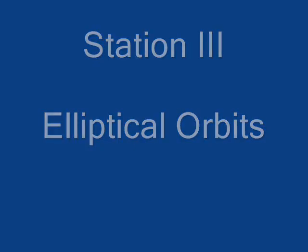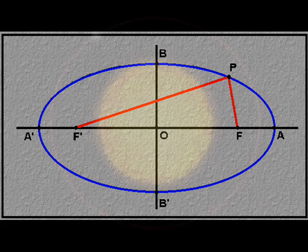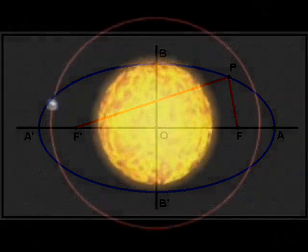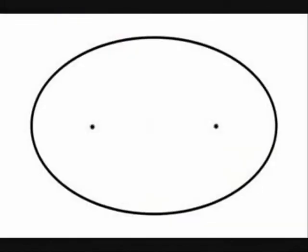The third station is elliptical orbits. An ellipse is like an oval. We study ellipses because the orbital path of the planets is elliptical. A circle has one center point, but an ellipse has two points — two foci. The sun is found at one of the focal points. That's Kepler's first law.